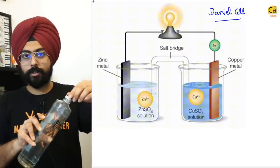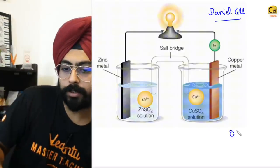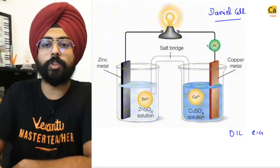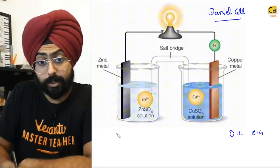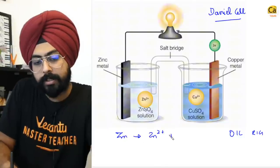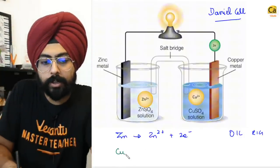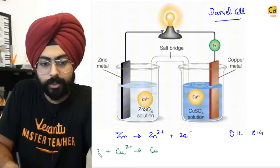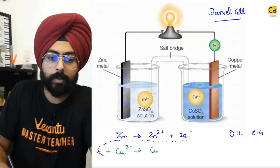Oxidation means loss of electrons — OIL RIG: oxidation is loss, reduction is gain. On the left-hand side is the oxidation half, where zinc is getting oxidized: zinc goes to Zn²⁺ and releases two electrons. On the right-hand side, copper is getting reduced: Cu²⁺ is going towards copper and gaining those two electrons.